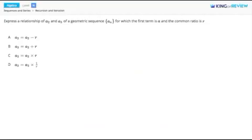Hi, this is King of Review. Here we have to express the relationship of the second and third terms, a2 and a3, of a geometric sequence where the first term is a and the common ratio is r.